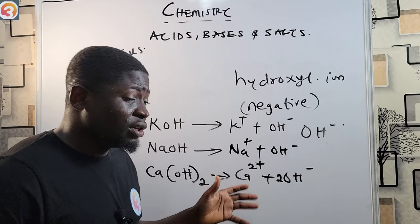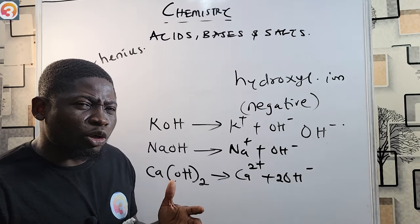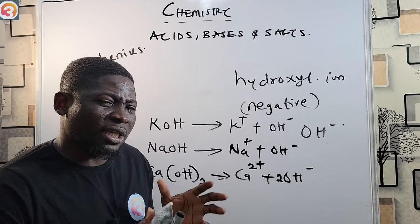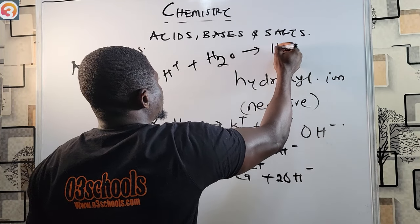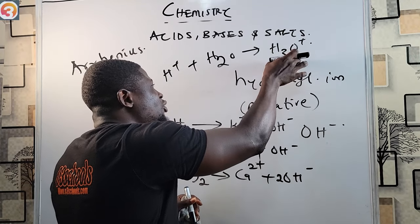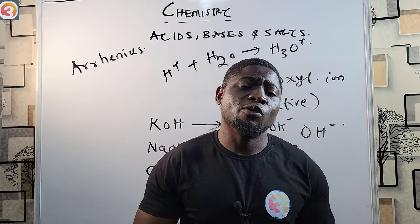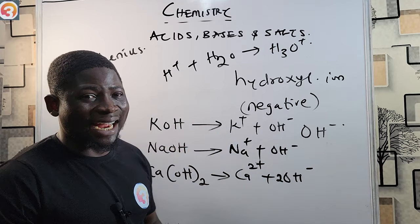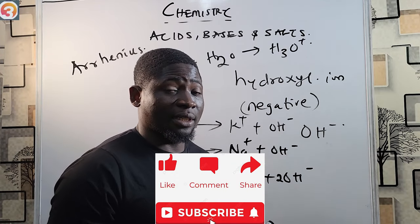To summarize: Arrhenius defined an acid as a substance that produces hydrogen ion as the only positive ion when dissolved in water, and since protons have affinity for water molecules, they form hydronium ion (H⁺ + H₂O → H₃O⁺), so Arrhenius acids can also be defined as substances that produce hydronium ion. Arrhenius bases are easy to identify because they have OH in their formula. That's where we end today's class. Don't forget to like, share, and subscribe — see you in the next class.